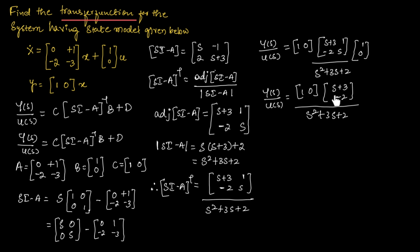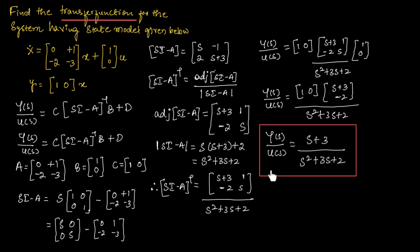Now let us multiply C times this result. We get 1·(S+3) + 0·(−2) = S+3. So we can write Y(S)/U(S) is equal to (S+3) divided by (S² + 3S + 2). This is the transfer function for the given state model. This concludes the problem of finding the transfer function for a given state model.